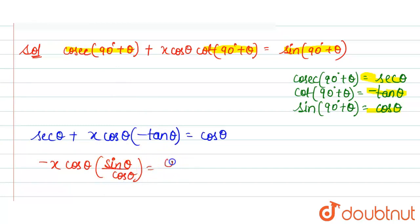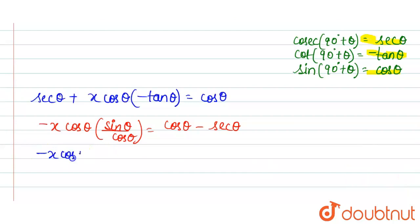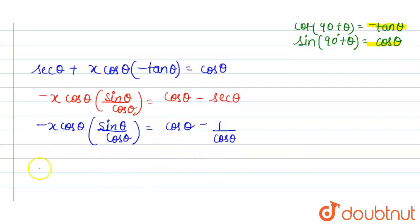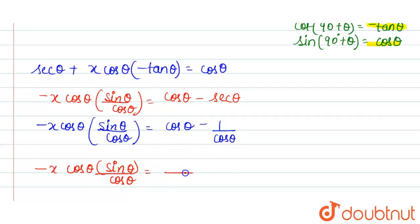Now cos θ and cos θ cancel, so we get: −x · sin θ = cos θ − sec θ. Taking the LCM on the right-hand side gives cos²θ − 1, all over cos θ.